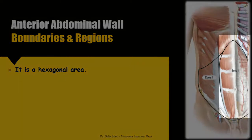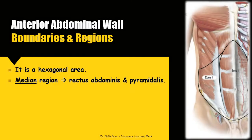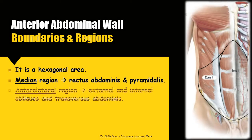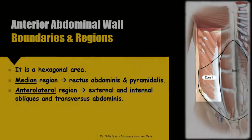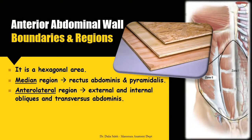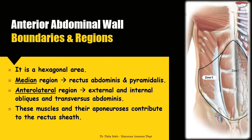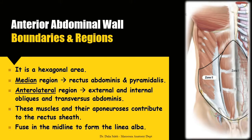The median region contains the rectus abdominis and the pyramidalis muscles, enclosed within the rectus sheath. The anterolateral region is formed of three flat muscles arranged in a plywood appearance. They are, from outside to inside, the external oblique, the internal oblique, and the transversus abdominis. These muscles and their aponeuroses contribute to the formation of the rectus sheath, and their aponeuroses fuse in the midline to form the linea alba.